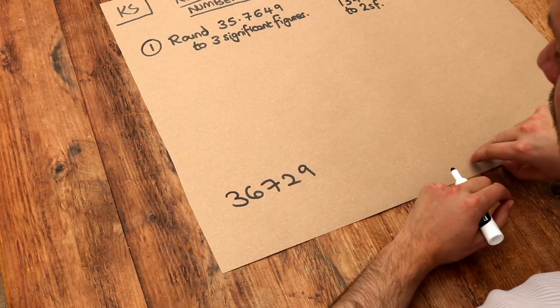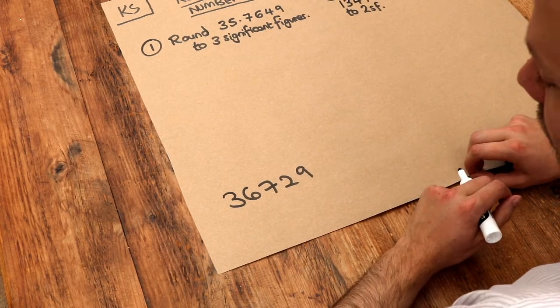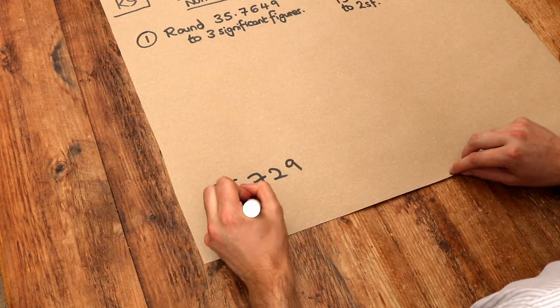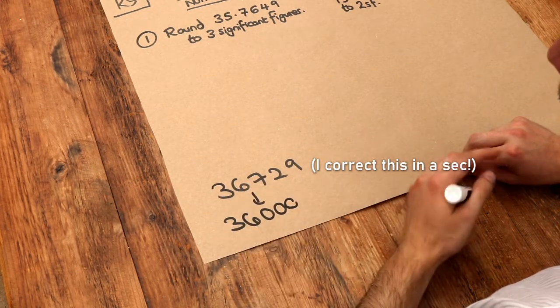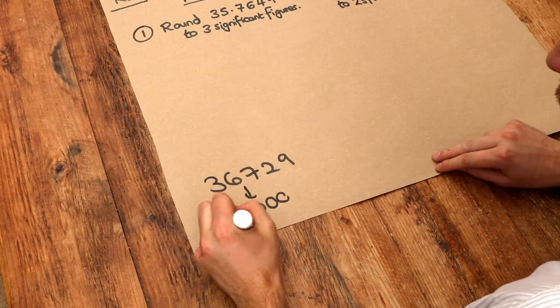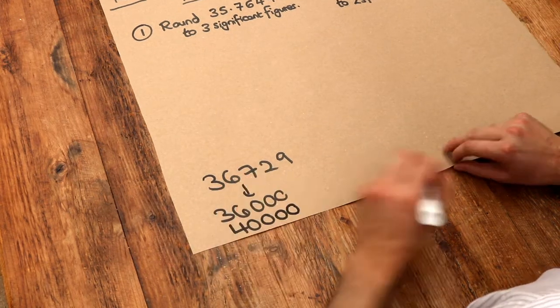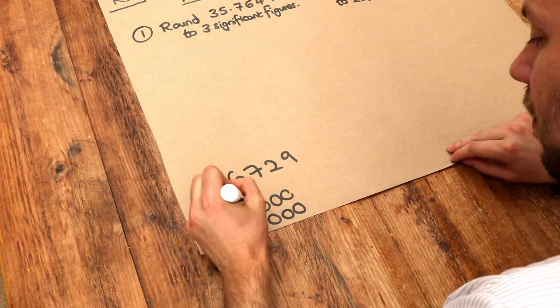You might just want to give a rounded figure. So for example, you could round to the nearest 1,000. So you could say there was 36,000 people in the stadium. Or you could round it even more. You could round it to say 10,000. So 40,000 people in the stadium. And that should really be 37,000, shouldn't it?